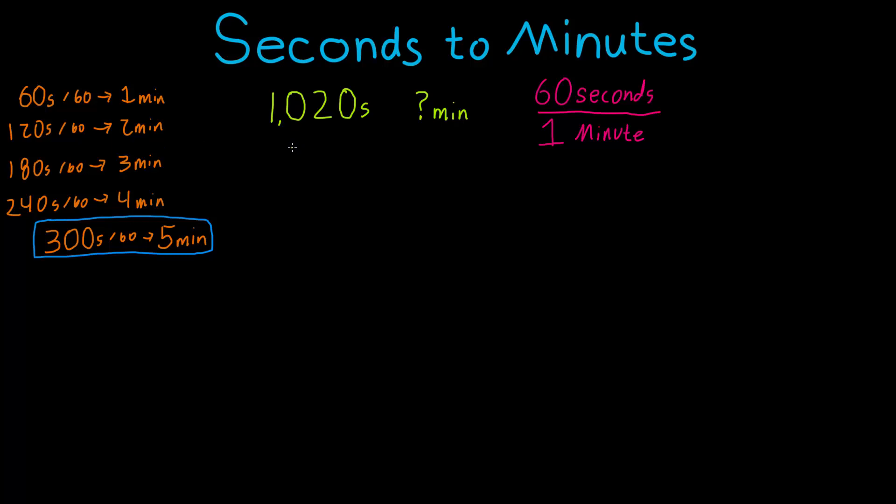Now mathematically, what we're doing is we're taking this 1020 seconds, if we want to find the minutes, 1020 seconds divided by, I'm going to do it this time with units, we have 60 divided by 1 here, and this is seconds per minute. We're just taking this 60 divided by 1 seconds per minute. Now 60 divided by 1 is the same as 60.